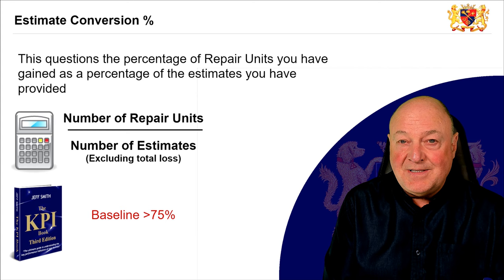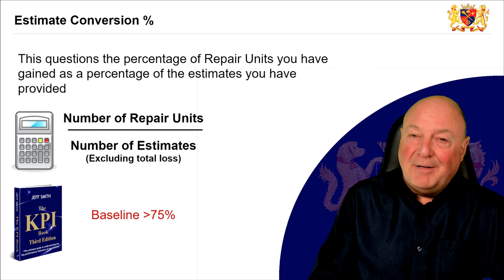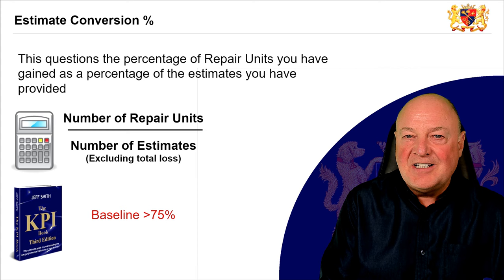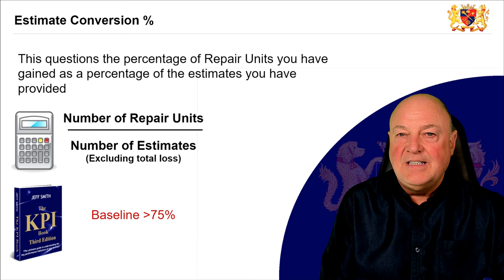If you're at 50% conversion, you might want to think about what's happening there. If you're at 95% conversion, you might also want to think about what's happening there. This whole thing about baselines and benchmarks is about forcing a question — they're not international targets to be hit. So the estimate conversion ratio is saying: no matter what you want, you should be converting at least 75%.